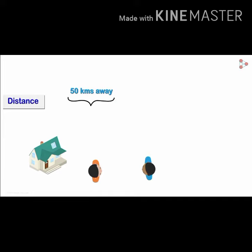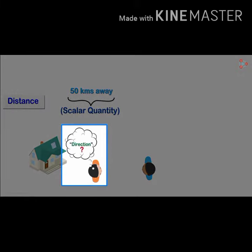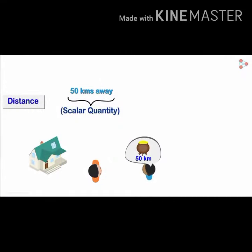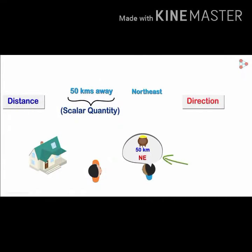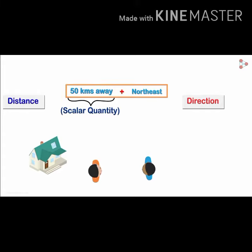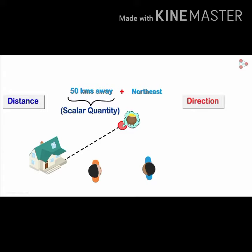One-dimensional information like this is called a scalar quantity. Your question to him would be: which direction from home? When you are told that it's 50 km in the northeast direction, you have the precise information of the location. This now becomes two-dimensional information — distance and direction. The treasure pot is here. Two-dimensional information like this is called a vector quantity.